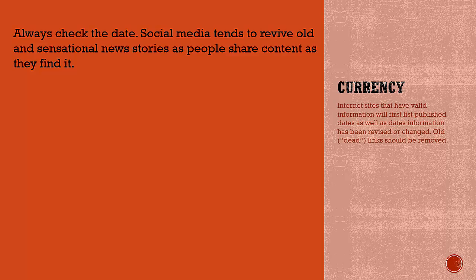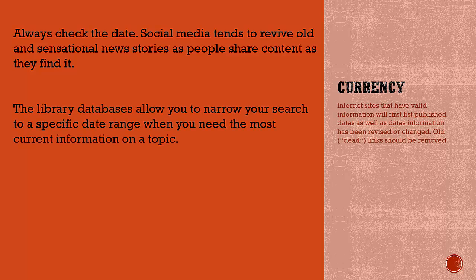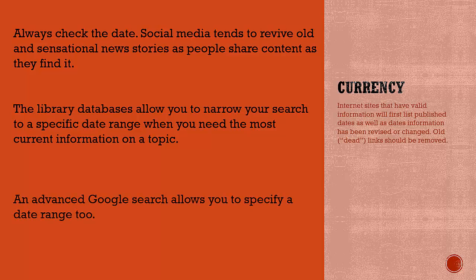Information found online is the most current, up-to-date information available, but sometimes news is so new that the events surrounding an event may be taken out of context, or news commentaries may jump to conclusions before a study of the events and characters has been taken into account.